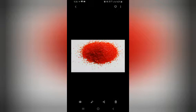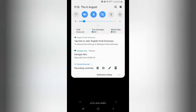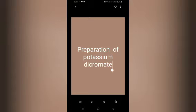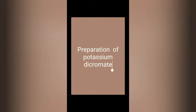Now let me start with the preparation of potassium dichromate. There are three steps. First is the conversion of chromite ore into sodium chromate: the chromite ore is fused with sodium hydroxide or sodium carbonate in the presence of air.